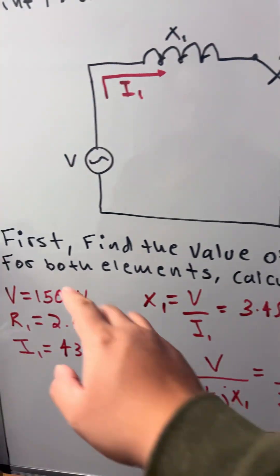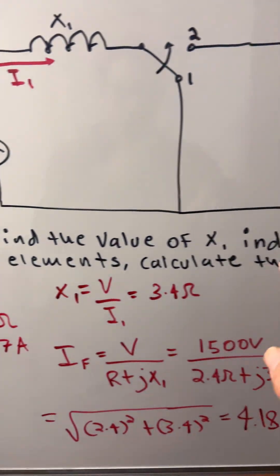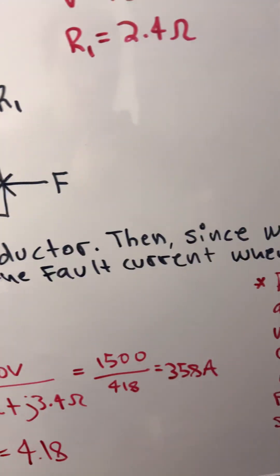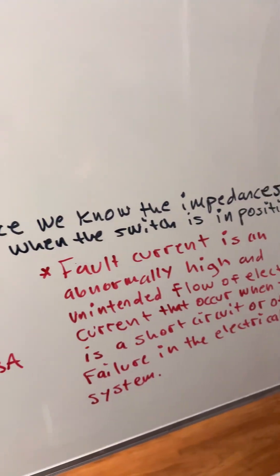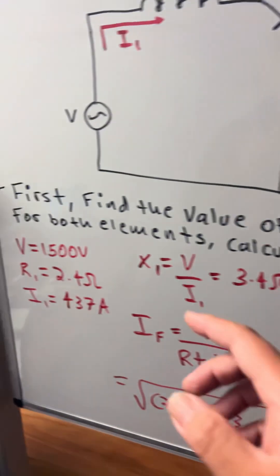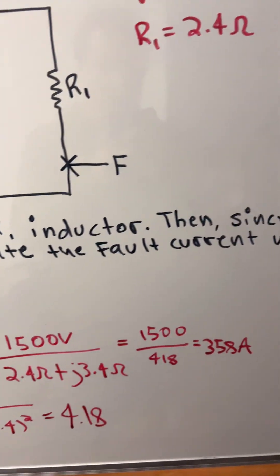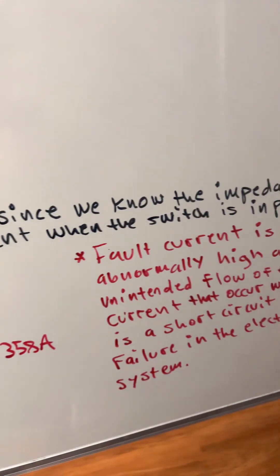So first we find the value of X1 inductor. Then since we know the impedances for both elements, we calculate the fault current when the switch is in position 2.